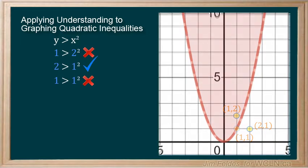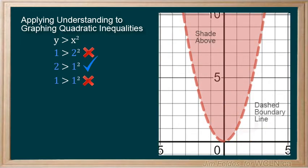So, now we can shade above the line and use the dashed line to show that values on the line are not included in the solution.